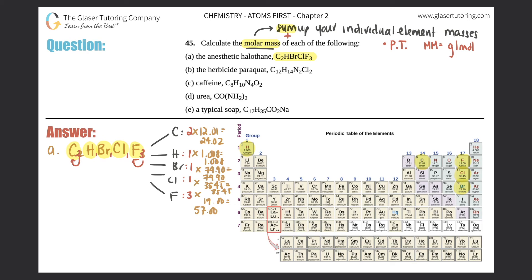Now the molar mass is just the sum of all individual element masses. So: 24.02 + 1.008 + 79.90 + 35.45 + 57.00 = 197.378 grams per mole. Box that answer — that's the answer to part A.